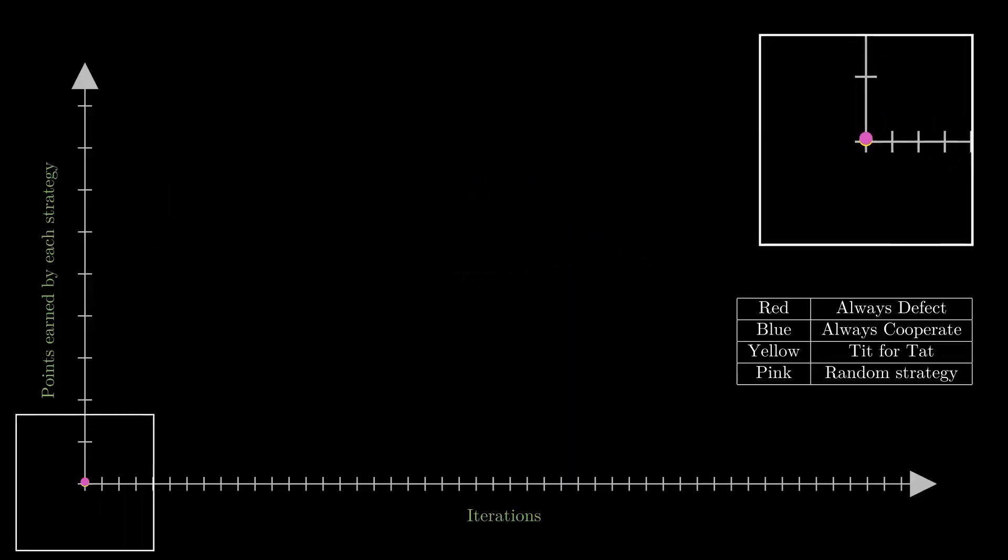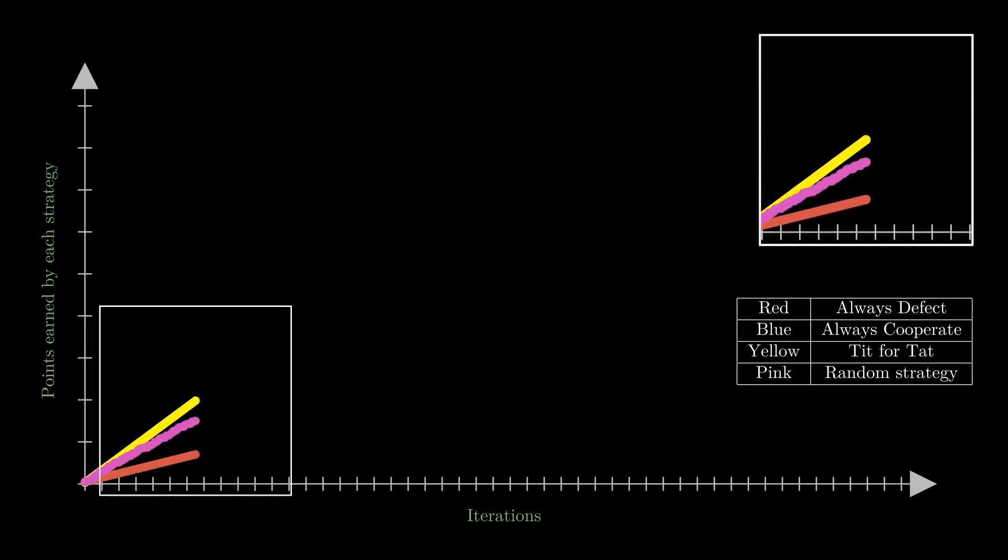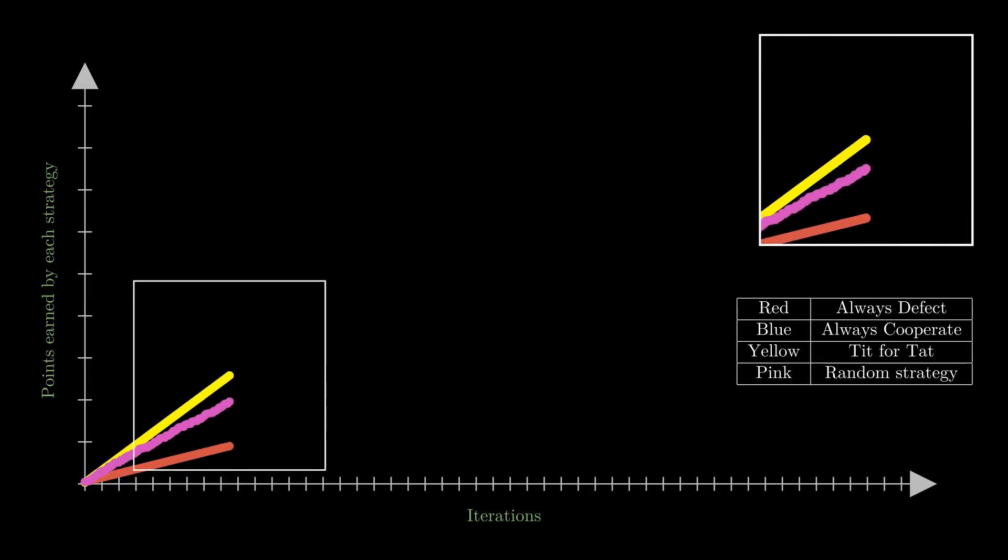This time around though, with defect strategy, tit for tat also acts as a defect strategy. And because reward points for cooperation are higher than punishment for defection, the always defect strategy loses the call this time.